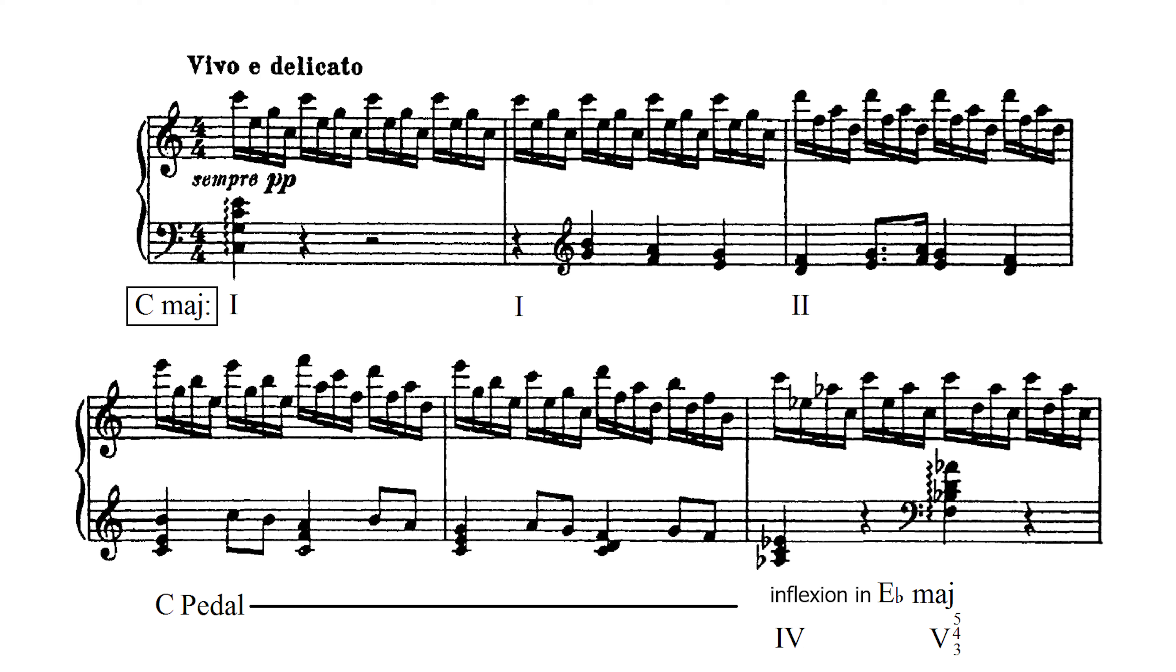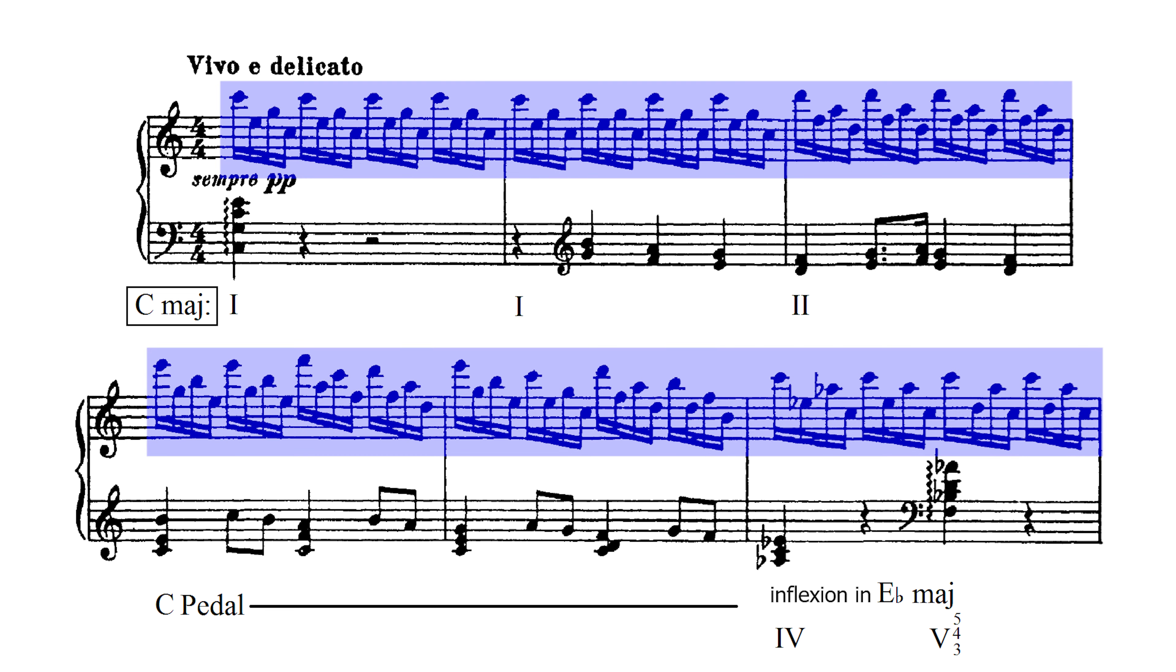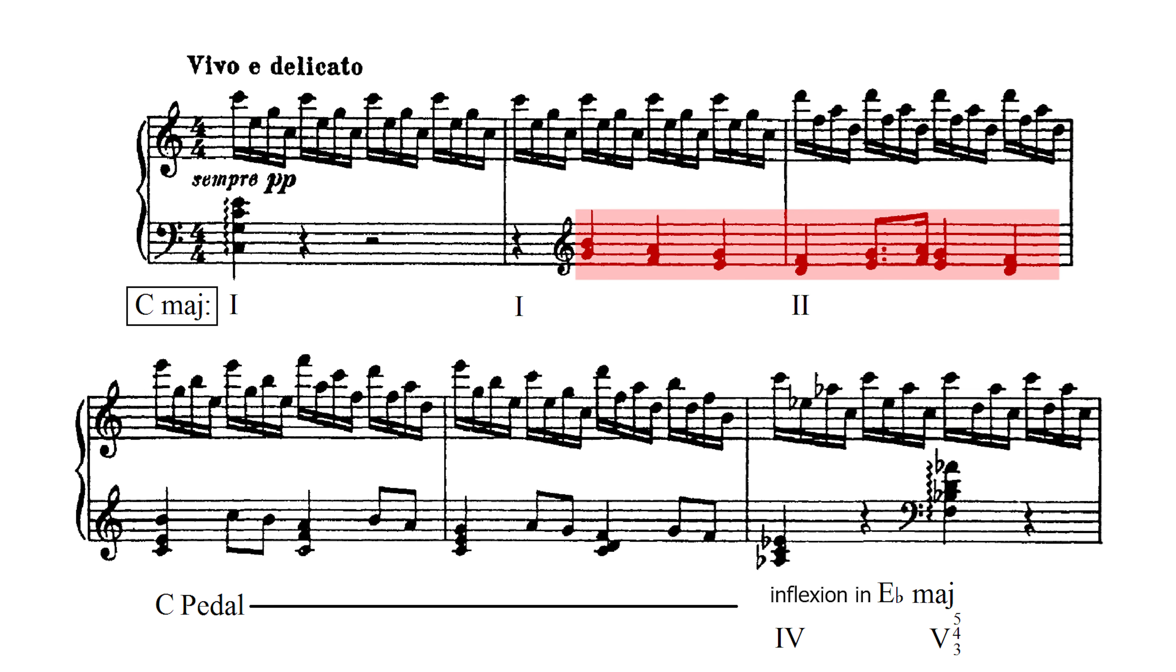Let's take a look at the compositional features of the A section. The key is C major. Throughout the composition in the A sections, the accompaniment is actually in the high voice with the right hand. The melody is in the left hand, moving in parallel thirds.